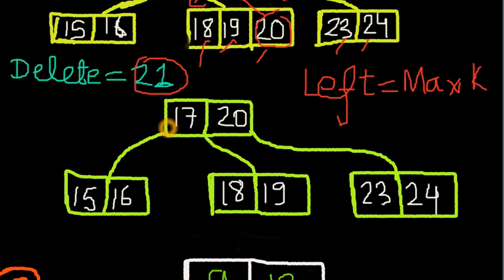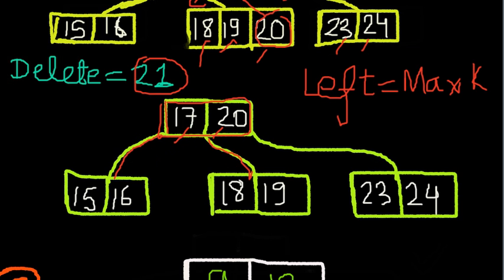In the first introduction lecture, if a node has one or two keys, it will have two-plus-one children. This is one child, two children, three children — that is the rule. It doesn't cause any violation. 15 and 16 are less than 17; 18 and 19 lie between 17 and 20, so it is perfect.